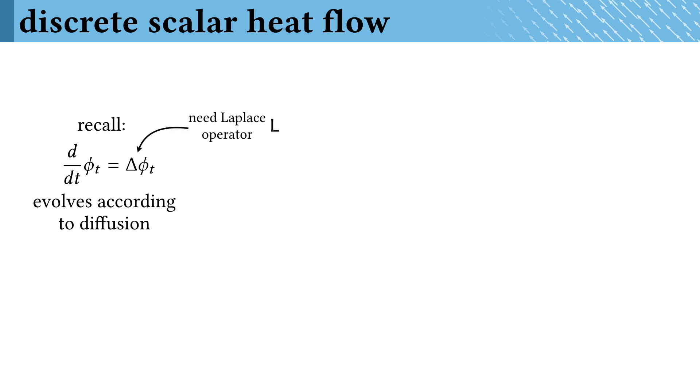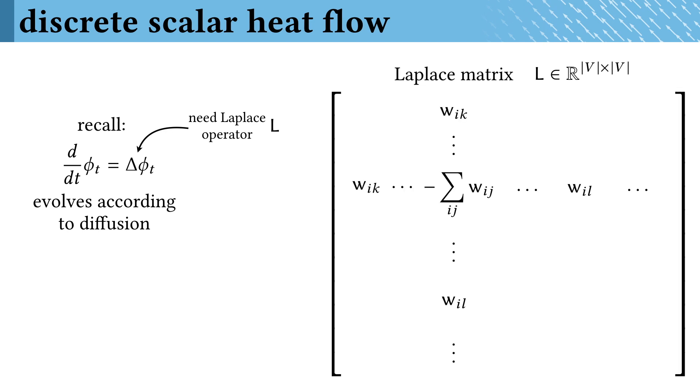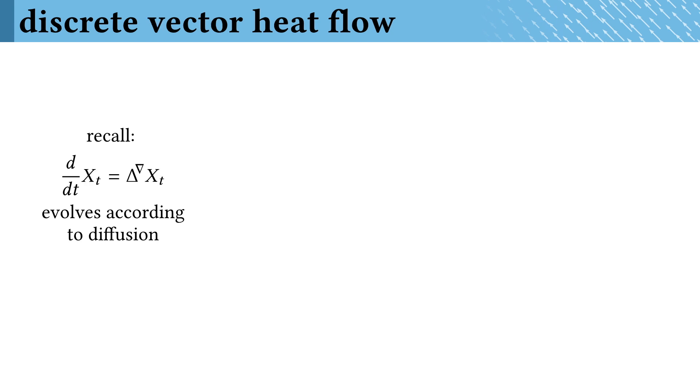We first discussed a simple scalar heat flow problem, which will require a discrete Laplace operator. This is just a sparse V by V matrix where the off-diagonals hold a weight for each edge between nodes and the diagonals hold the negative sum of these weights.